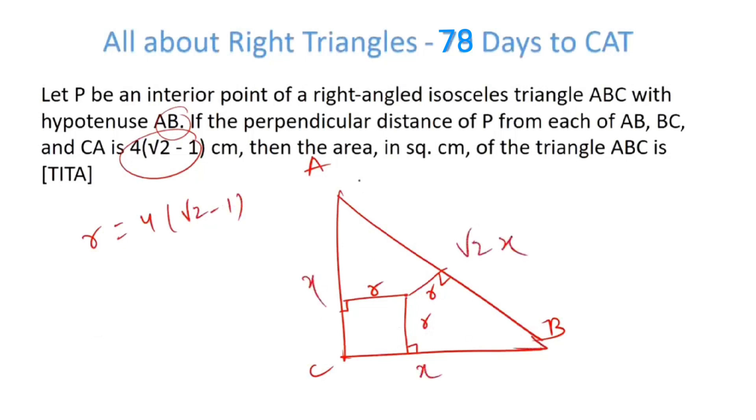So this is X, this is X, this is root 2X. Also a special type of right triangle 45, 45, 90. Small r here, we know A plus B minus C by 2.